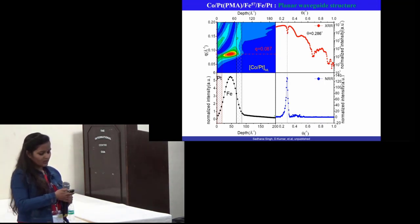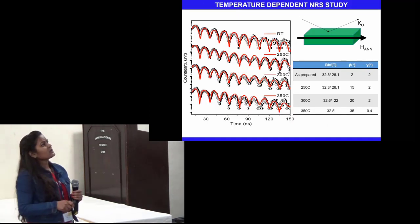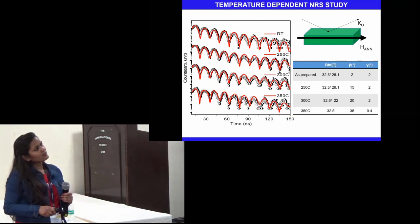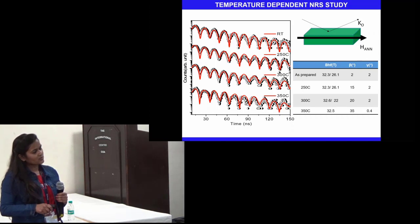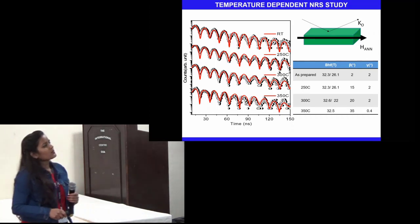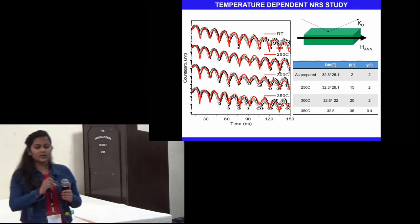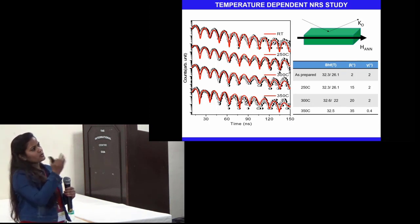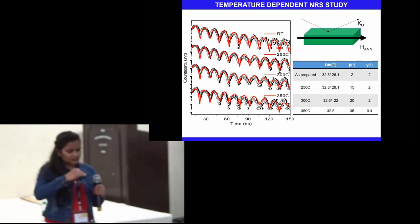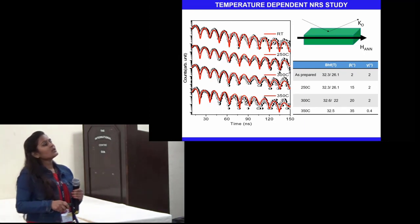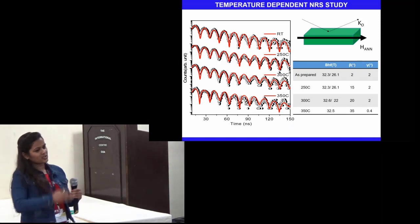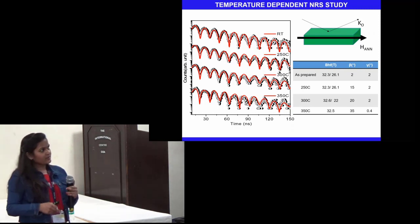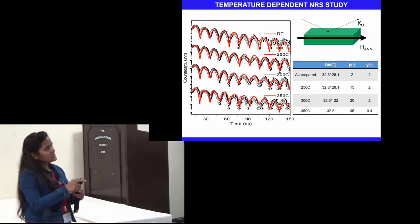We performed nuclear resonance spectra of various annealed samples in the presence of a field, with the field direction along the polarization vector of the incident beam. We observed that the as-prepared samples had perpendicular orientation, whereas at 250°C the net magnetization was rotated by 15°, showing that some in-plane moments were generated along the direction of annealing. This further confirms that the origin of exchange bias in this system is due to unequal in-plane moments generated at the interface along the direction of the annealing field.